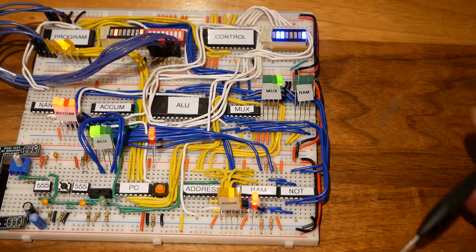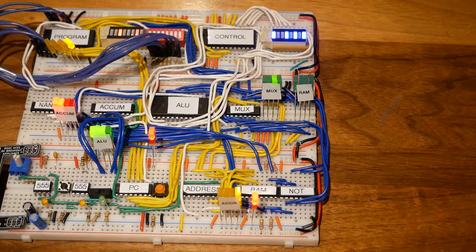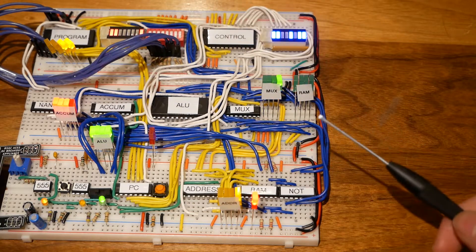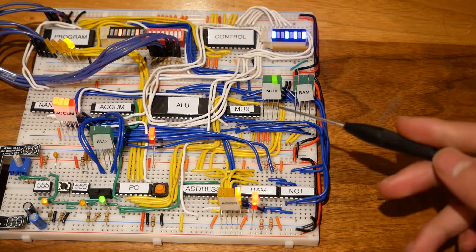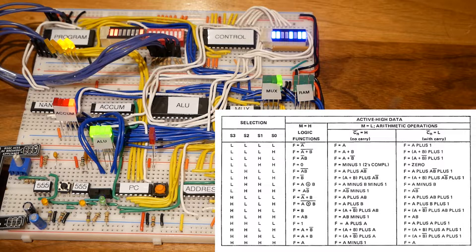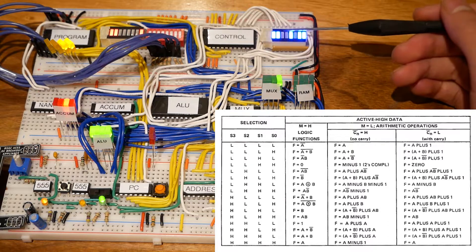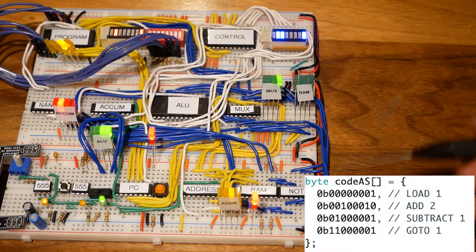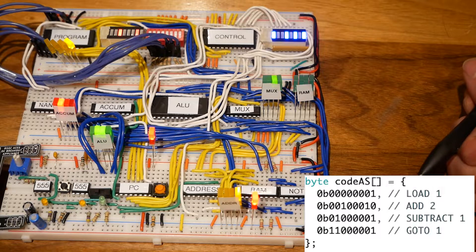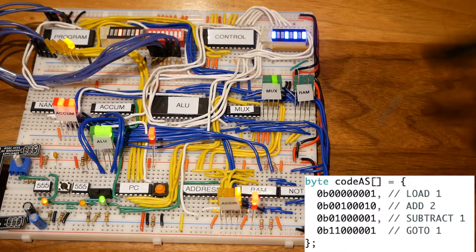The next two functions are the add and subtract functions. These two functions add or subtract a value on the accumulator by the value on the MUX output using the ALU. The function for add is A plus B and for subtract is A minus B, chosen by the six highest control bits. Here I've got a program on the program EPROM that adds two and subtracts one and constantly repeats that.